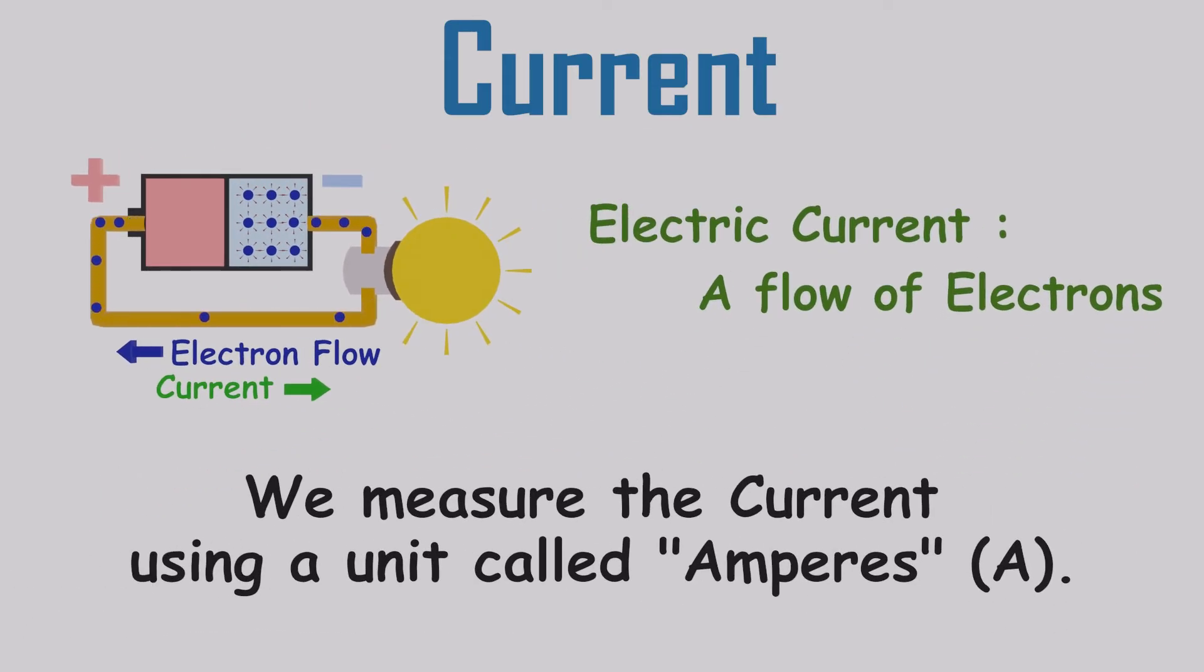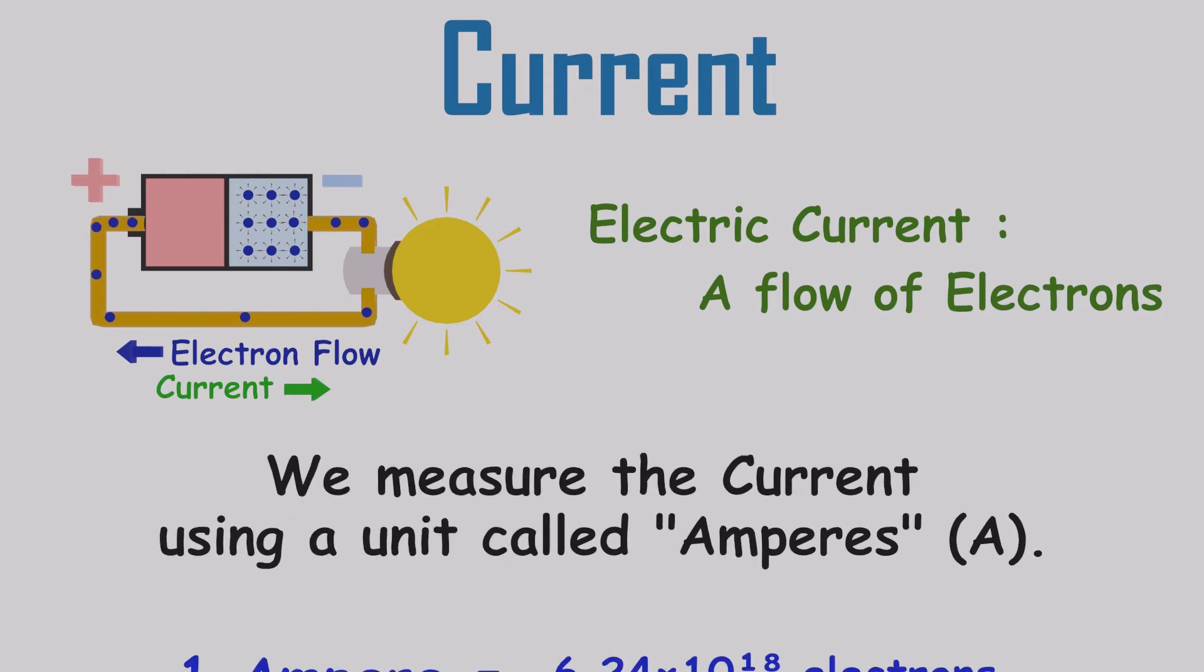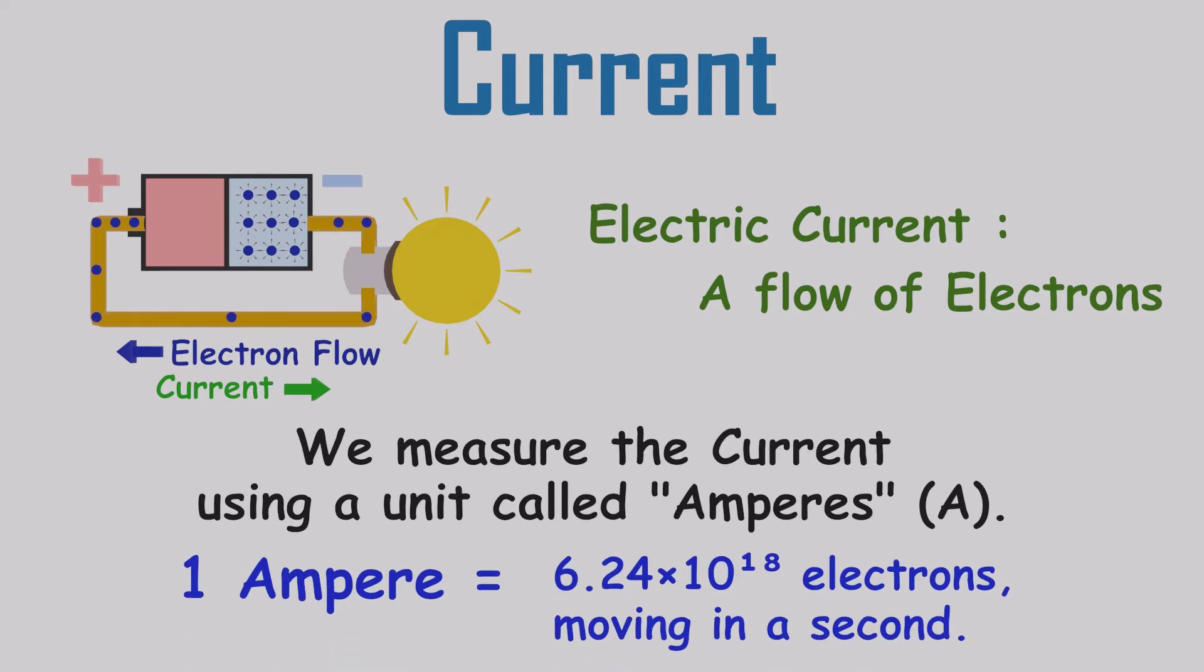We measure how many electrons pass by a spot in one second using a unit called amperes. One ampere is equal to 6.24 times 10 to the power 18 electrons worth of charge moving past a point in a second. That's a lot of electrons.